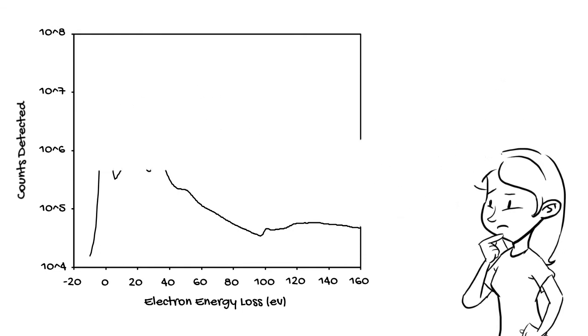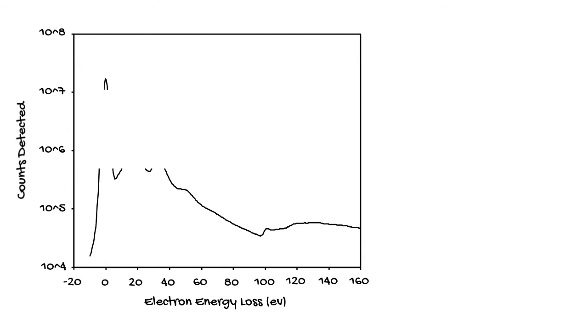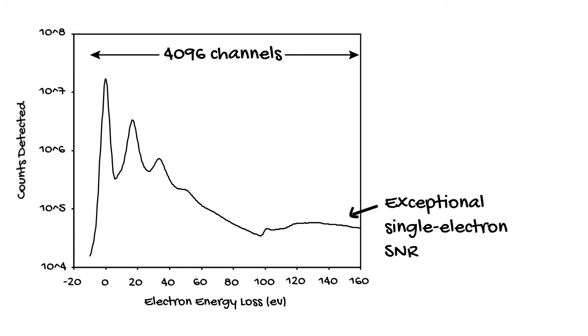So, are there any better options? Let's go back and rehash the requirements for a good EELS detector. The detector should have lots of channels, like 4K channels, so that your spectrum has sufficient resolution to detect features of interest. The detector should have exceptional sensitivity so that it can detect weak signals, especially in high-loss regions of the spectrum. And finally, the detector should have sufficient dynamic range to capture the entire spectrum for many different EELS experiments.